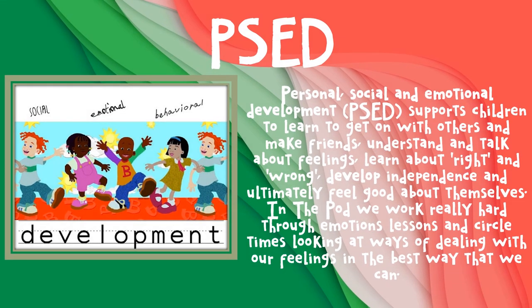In personal, social and emotional development, it supports children to learn to get on with others and make friends, understand and talk about feelings, learn about right and wrong, develop independence and ultimately feel good about themselves. In the pod we work really hard through emotions lessons and circle times, looking at ways of dealing with our feelings in the best way we possibly can.